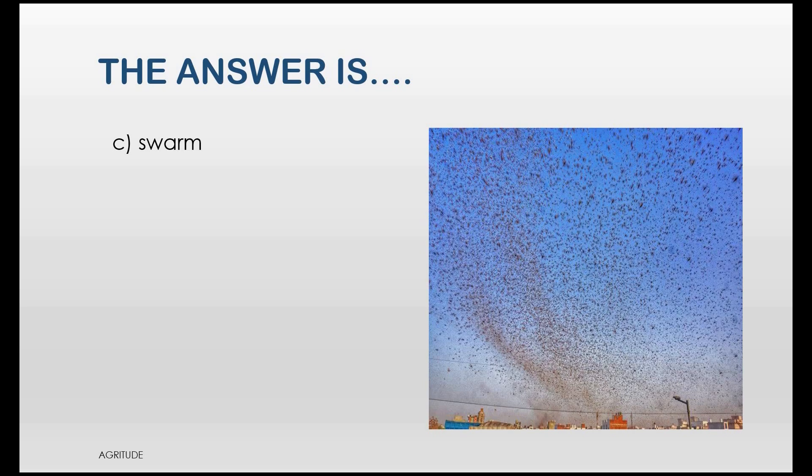The answer is Swarm, that is huge group of gregarized adult locusts is called as Swarm. And the same for Immatures is called as Band, that is huge group of gregarized immatures is called as Band. And gregarized locusts are the locusts which behave in groups and solitary locusts are the locusts which behave individually.